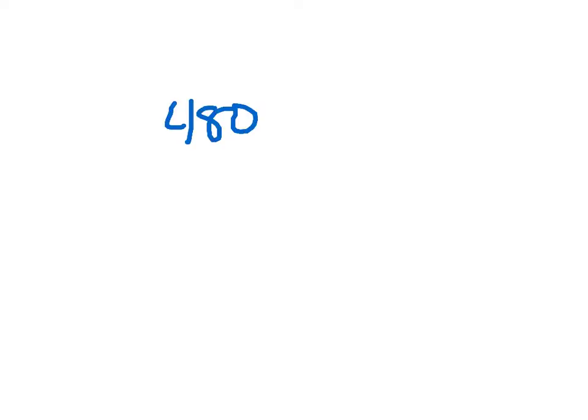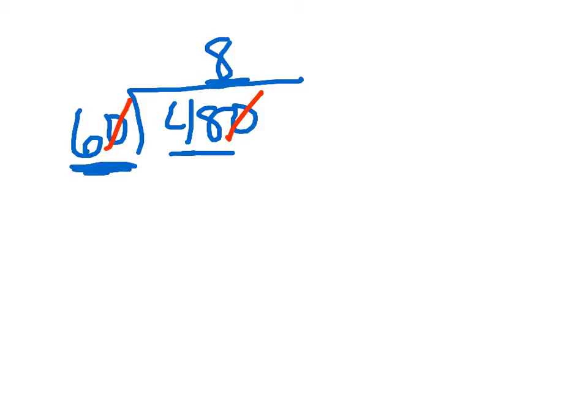Let's say 480 divided by 60. Well, if I can get rid of a zero in here, I can also do the same thing over here. And just look at it as if it is 48 divided by 6, and that would get me 8. 6 goes into 48 eight times, just as 60 would go into 480 eight times.